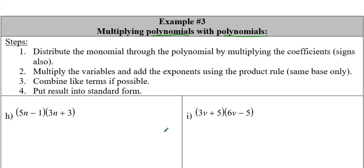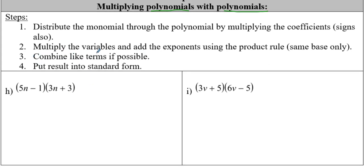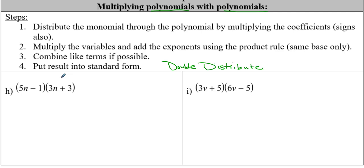We've got polynomials times polynomials. You may have seen this before - don't worry, I'll help you through it. We now have an extra step: we might see like terms that we want to combine at any time possible to simplify. We can use the rainbow technique or the box method. Here on the outside we have two terms distributing into two terms - we're going to double distribute.